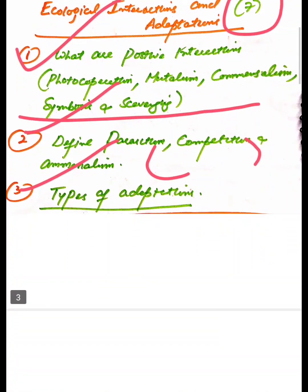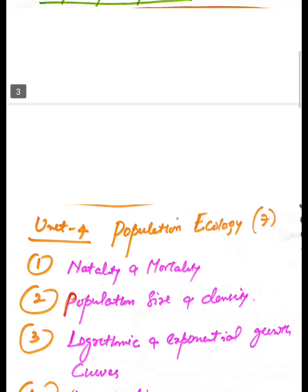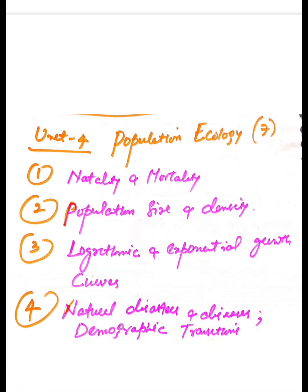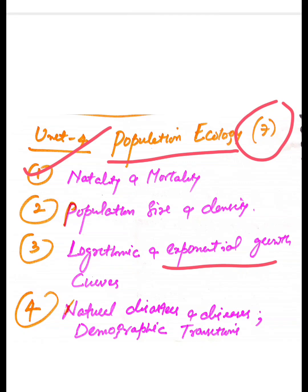Coming to the fourth unit, that is Population Ecology. This will also be 7 marks. First question is natality and mortality. Second one is population size and density. Third is logarithmic and exponential growth curves. Fourth question is what are natural disasters and diseases, and demographic transitions.